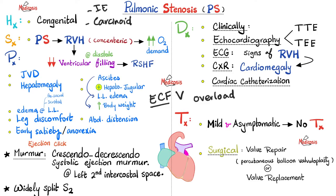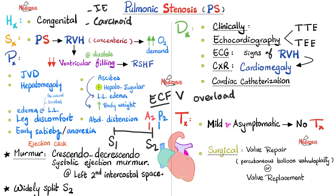What does widely split S2 mean? Normally, S2 is split because the aortic valve closes just before the pulmonic valve. But when the right side of the heart is overwhelmed due to pulmonic valve stenosis, there is a delay in the closure of the pulmonic valve. Therefore, the P2 component of the S2 heart sound is shifted to the right and delayed, creating a bigger split between A2 and P2. This is called widely split S2.